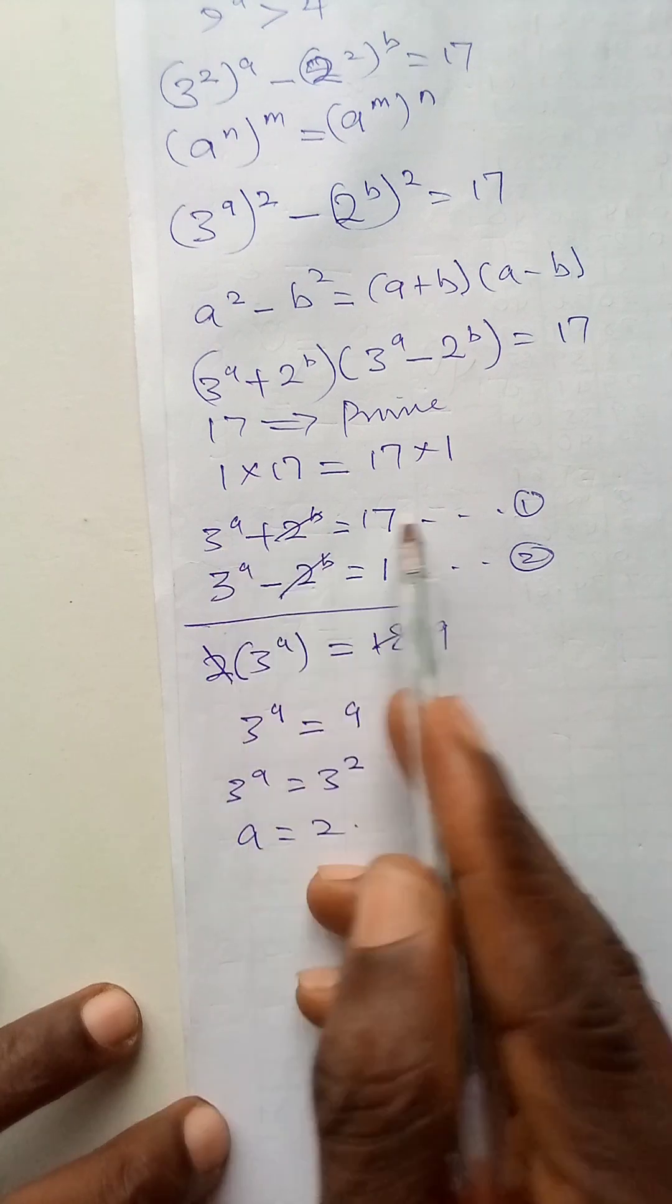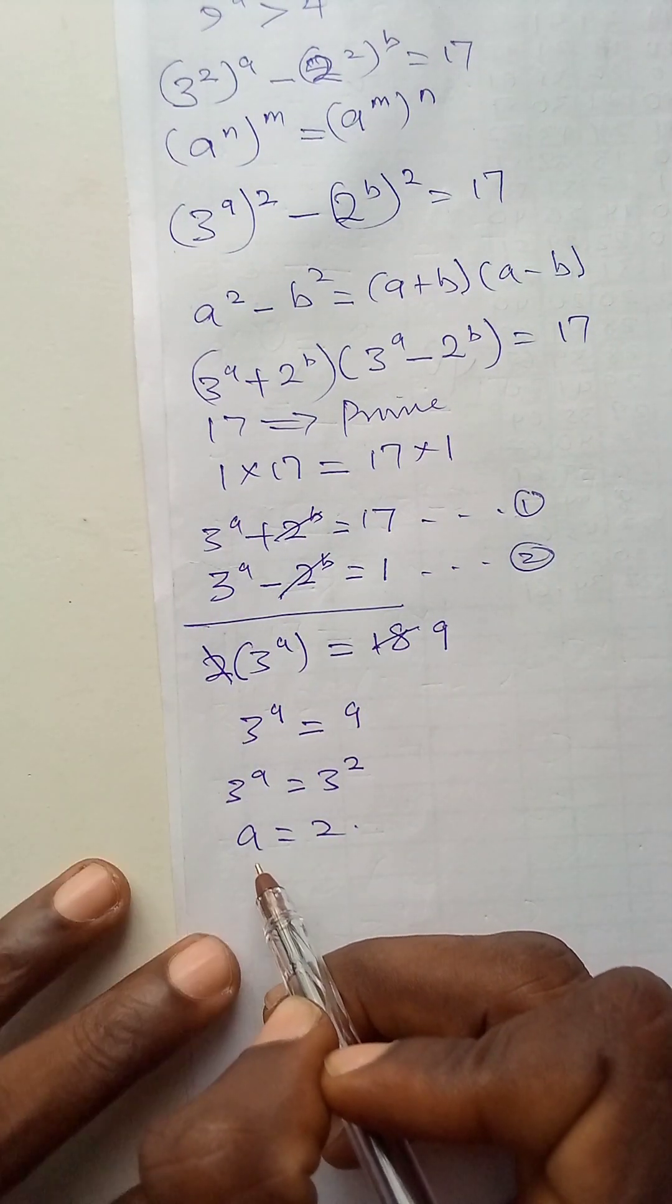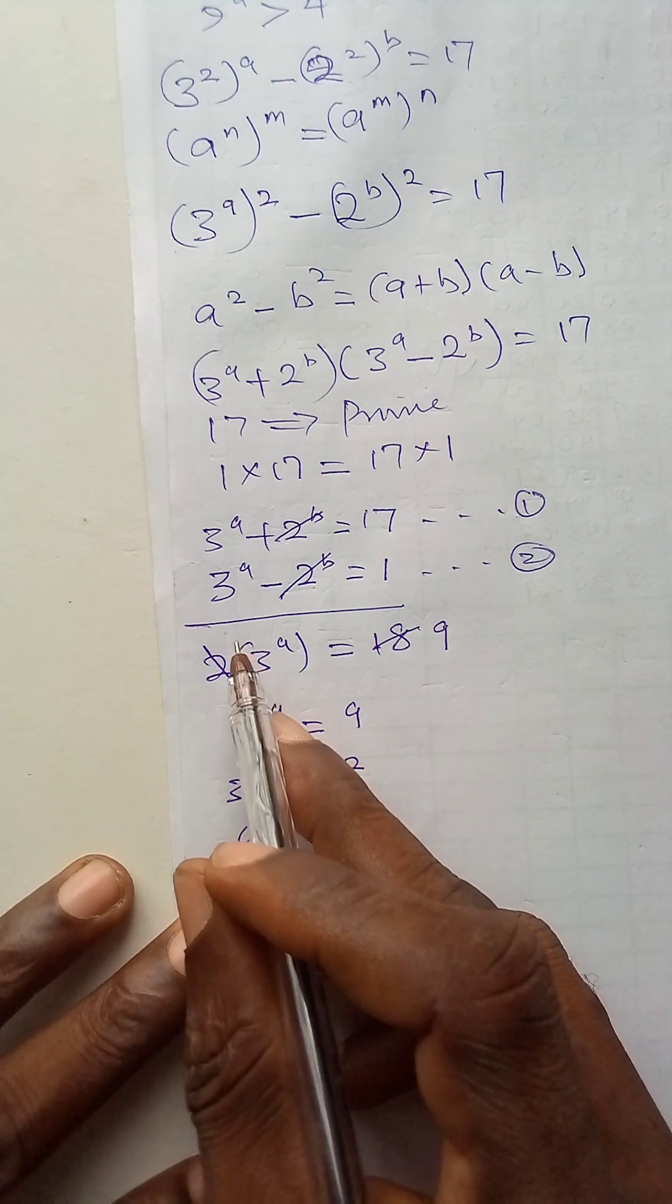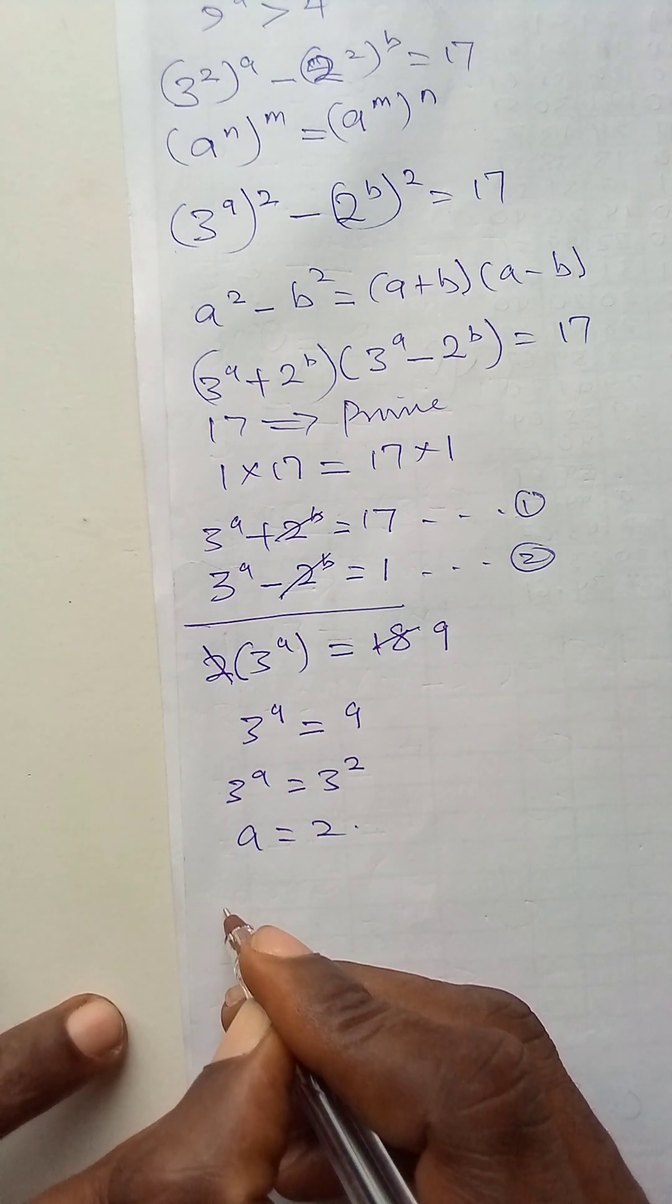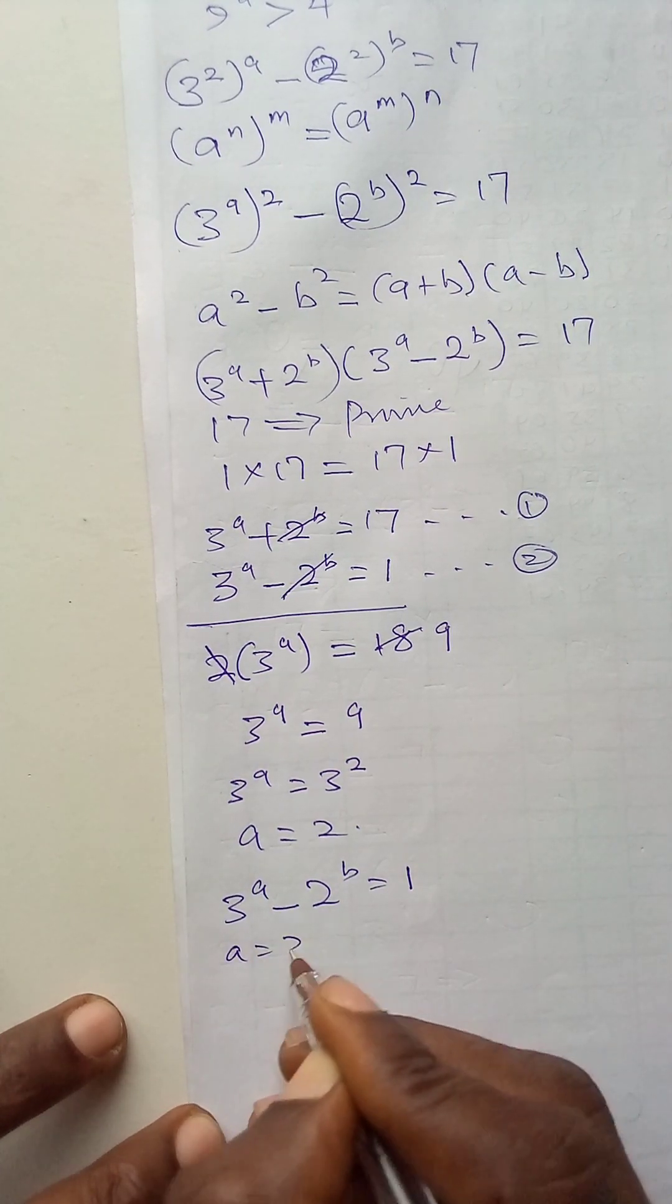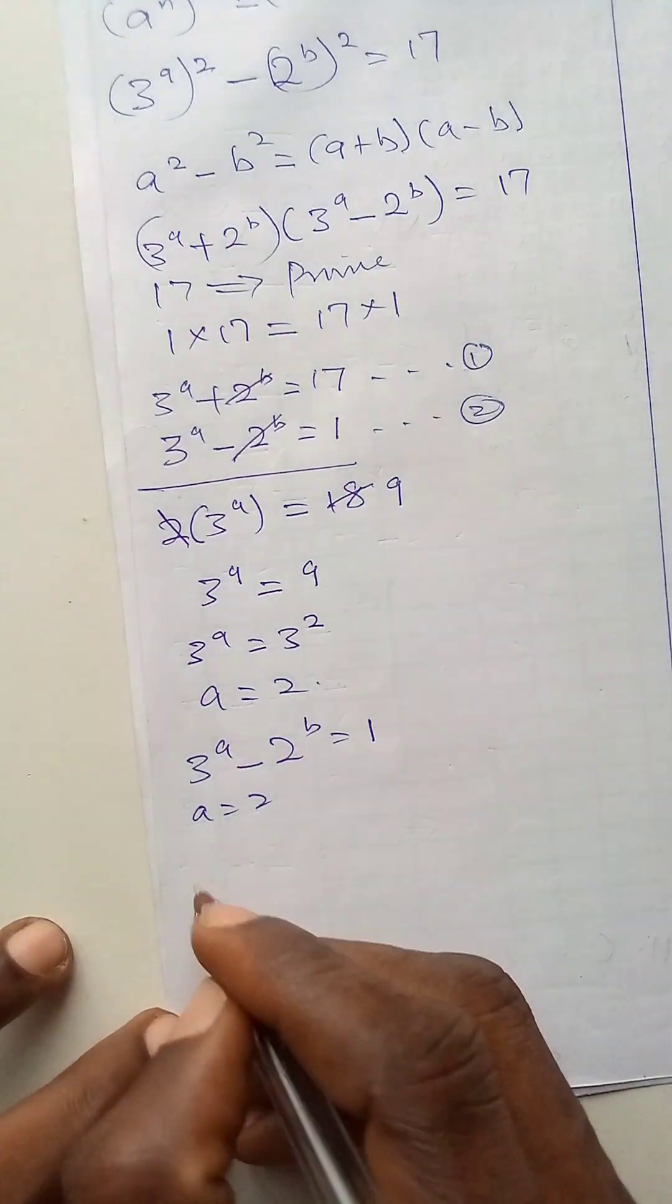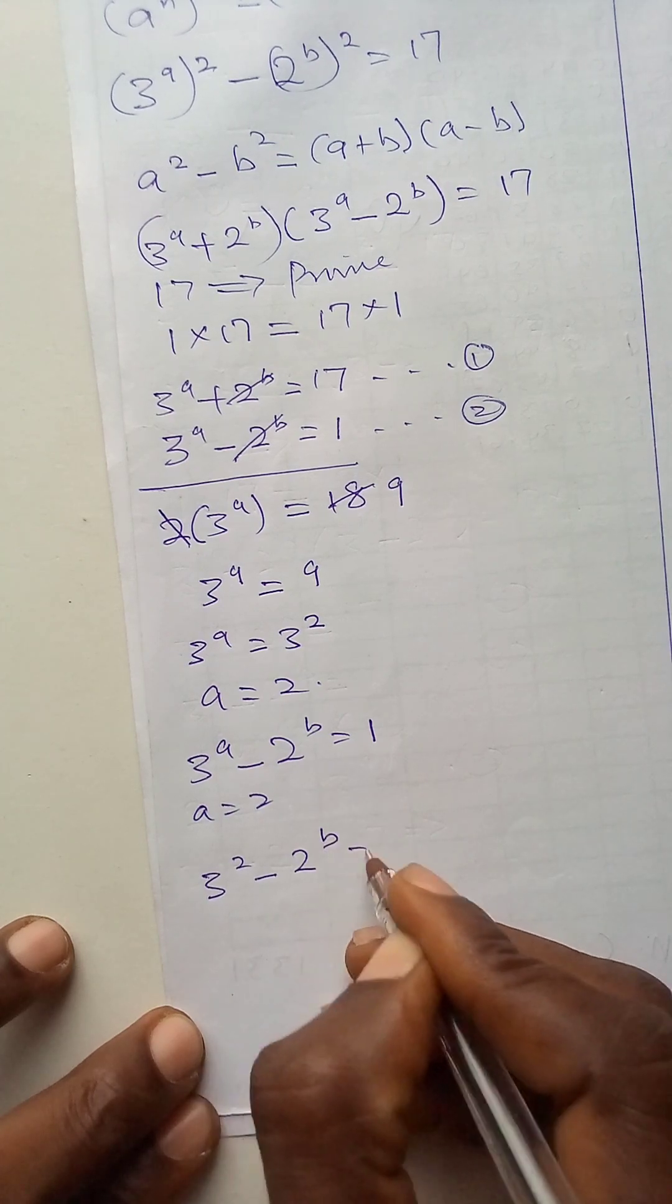Now, let's go back to either equation 1 or equation 2 and then put the value of a, value of 2 for a in equation 1 or equation 2. Let's take equation 2. We have 3 to power a minus 2 to power b is 1. Now, a is 2, so I will plug in 2 for the value of a there. That becomes 3 to power 2 minus 2 to power b is 1.